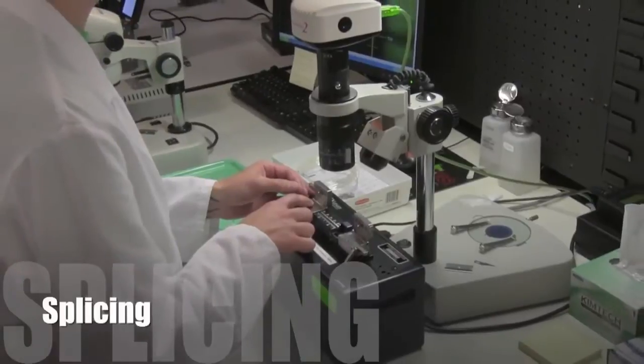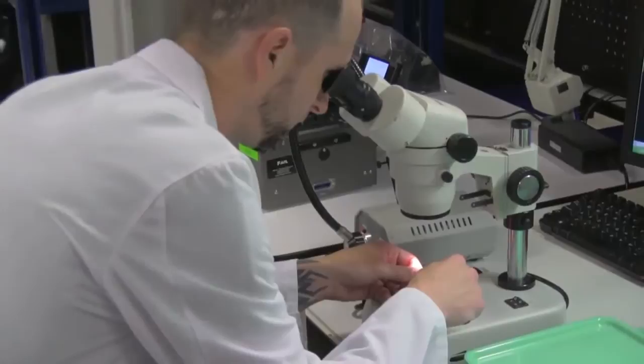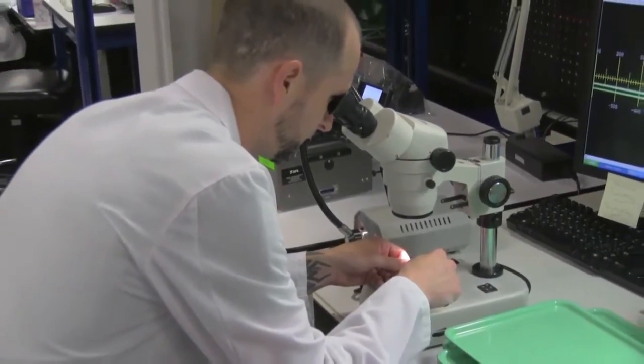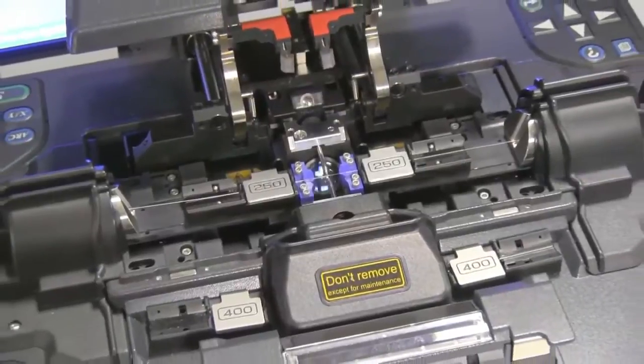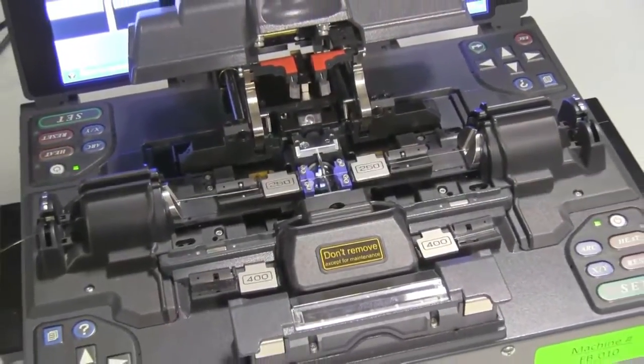In our fusion splicing manufacturing cell, single mode fiber is precisely measured and then cleaved. After inspection, it is fusion spliced to a large mode field area multi-mode fiber for use in high power applications.